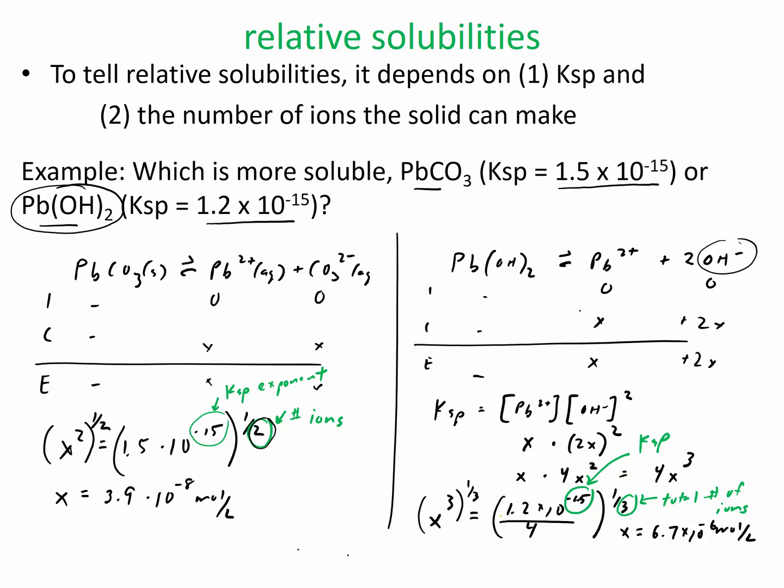So what we predicted was the one that made more ions is going to be more soluble. And as you see, it's because of this step right here. So over here, we took both sides to the 1 half power because there were two ions. Over here, we took it to the 1 third power because there were three ions.